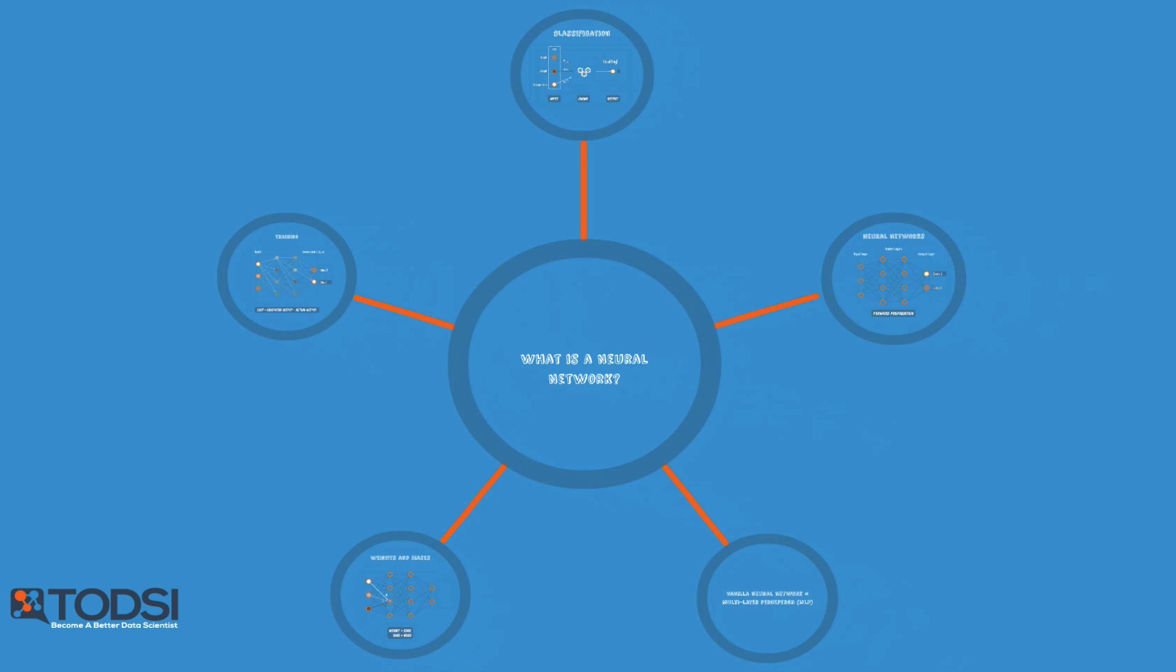At this point, you might be wondering, why create and train a web of classifiers for a task like classification, when an individual classifier can do the job quite well? The answer involves the problem of pattern complexity, which we will see in the next video.